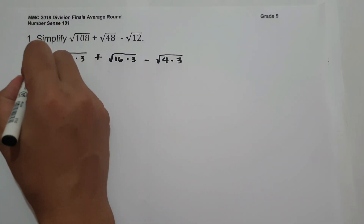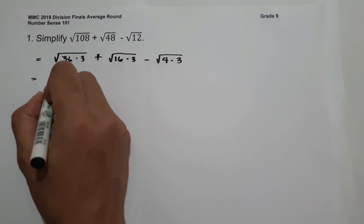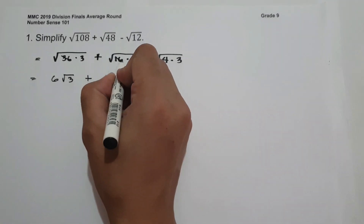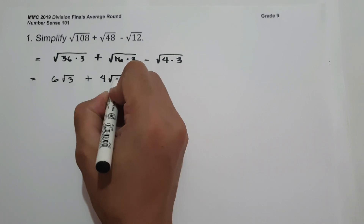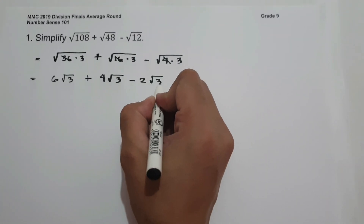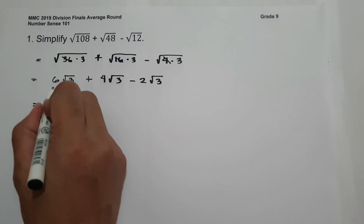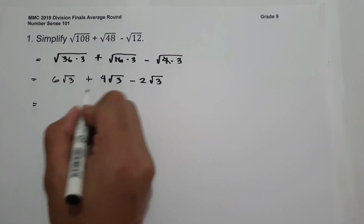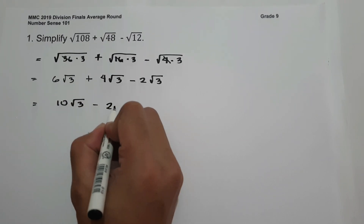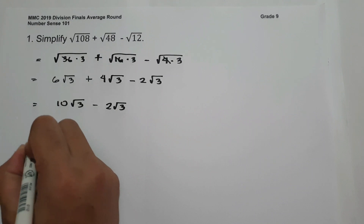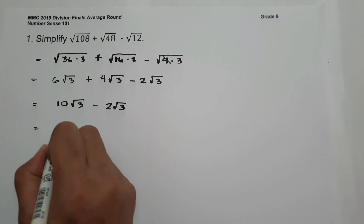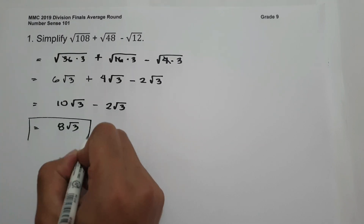Let us simplify. The square root of 36 is 6, and we have square root of 3. The square root of 16 is 4, and the square root of 4 is 2, then square root of 3. So we have 6√3 plus 4√3, that is 10√3, minus 2√3. So 10√3 minus 2√3 equals 8√3. This will be our answer.